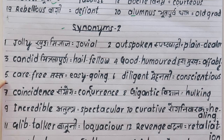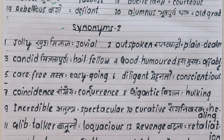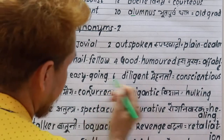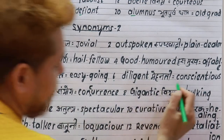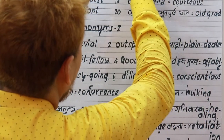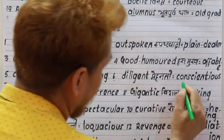Fifth word is 'carefree', meaning relaxed and laid-back. The synonyms are 'easygoing' and 'relaxed'. Sixth word is 'diligent', meaning hardworking. The synonyms are 'assiduous' and 'conscientious'. For example: I am diligent, I am conscientious.